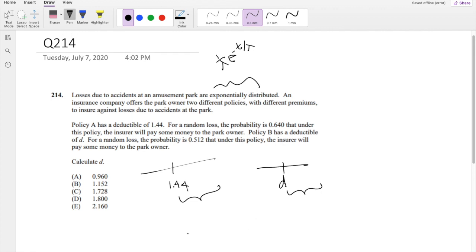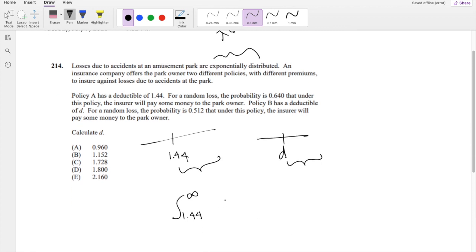So for policy A, it is going from 1.44 to infinity, and for some lambda, 1 over lambda, e to the negative t over lambda, this is equal to 0.640.